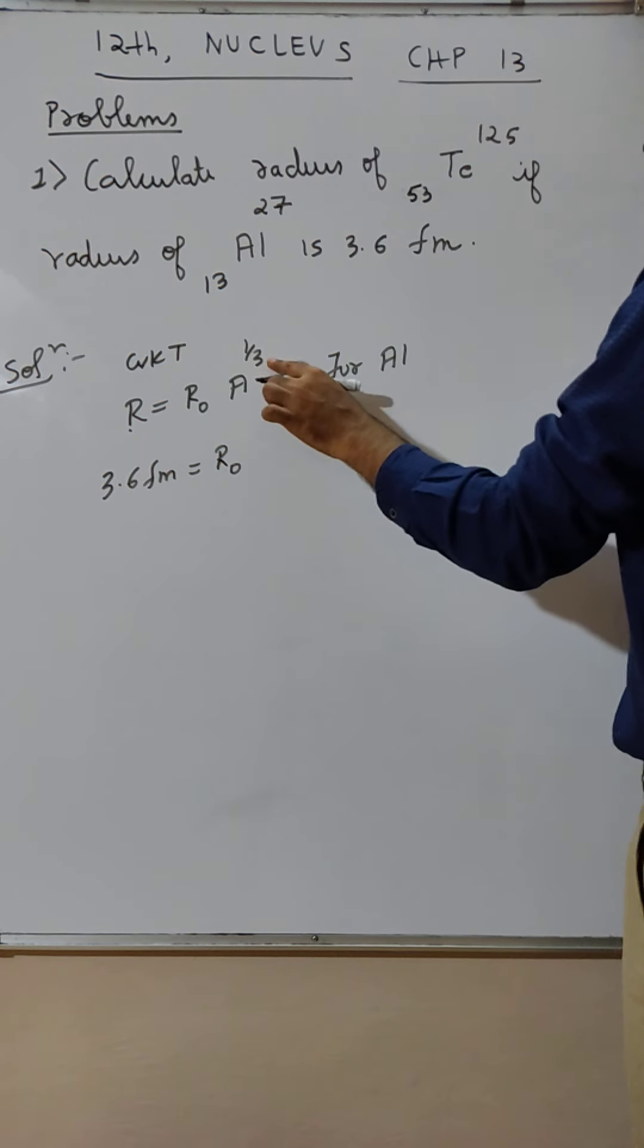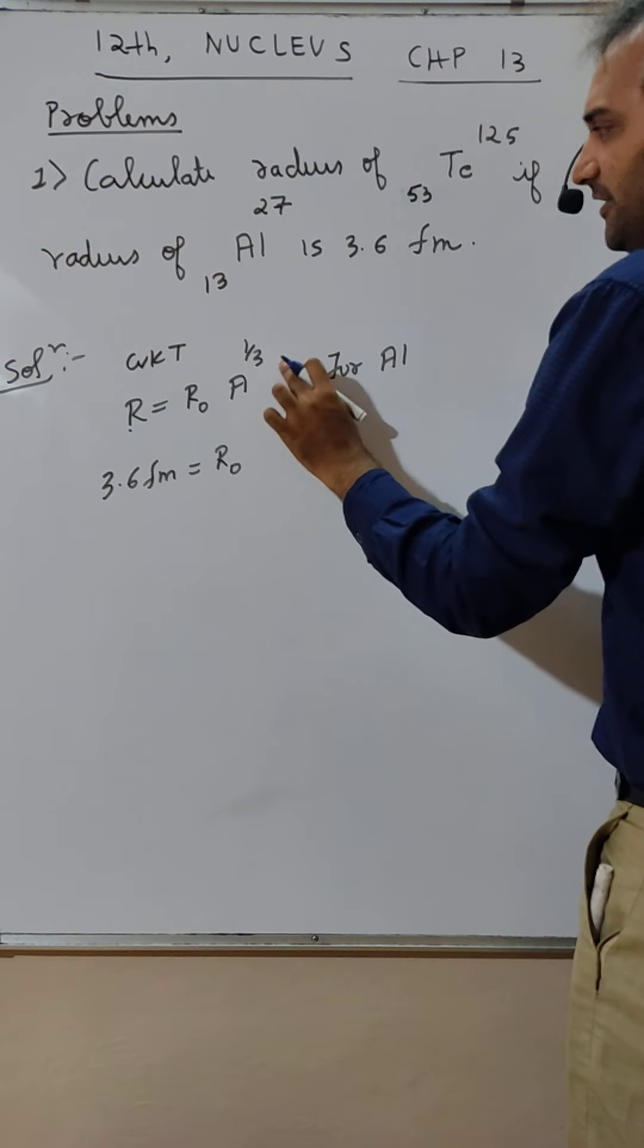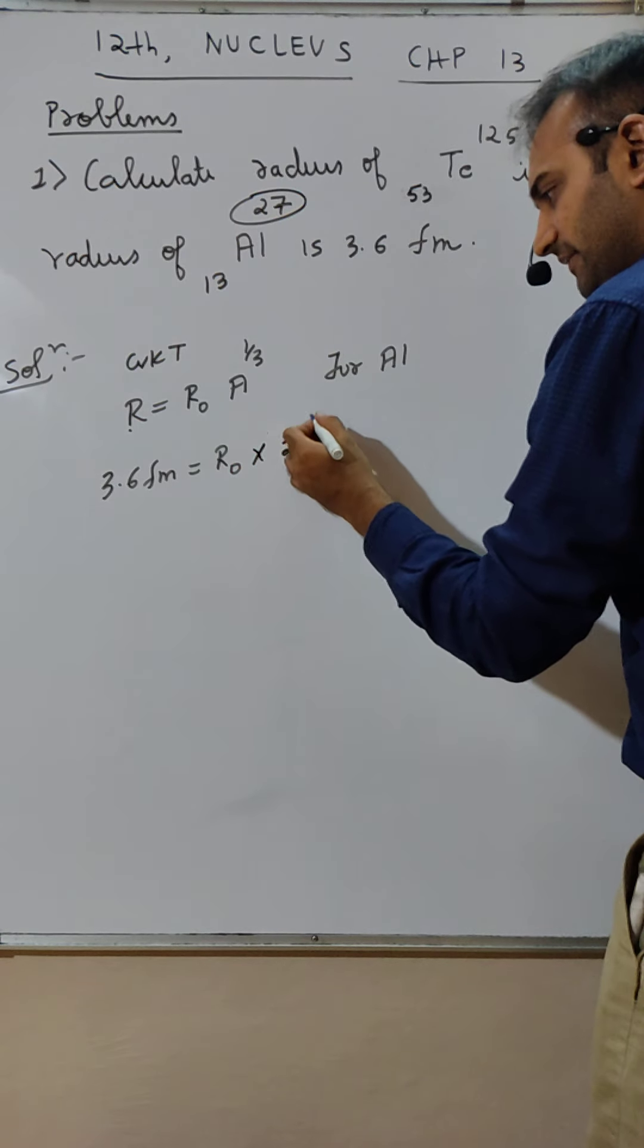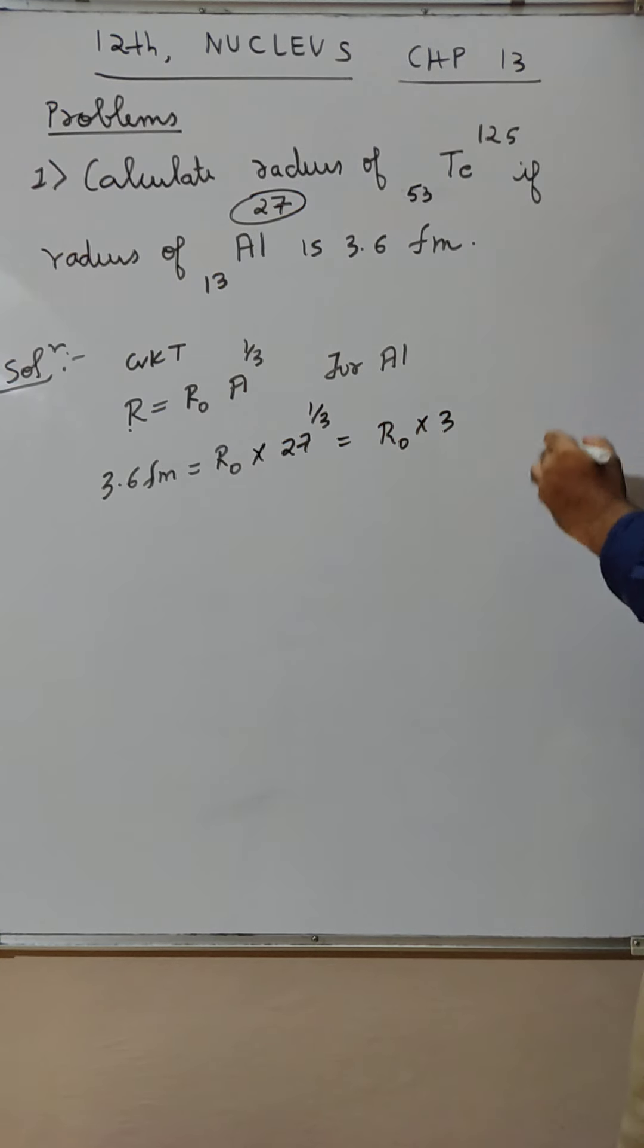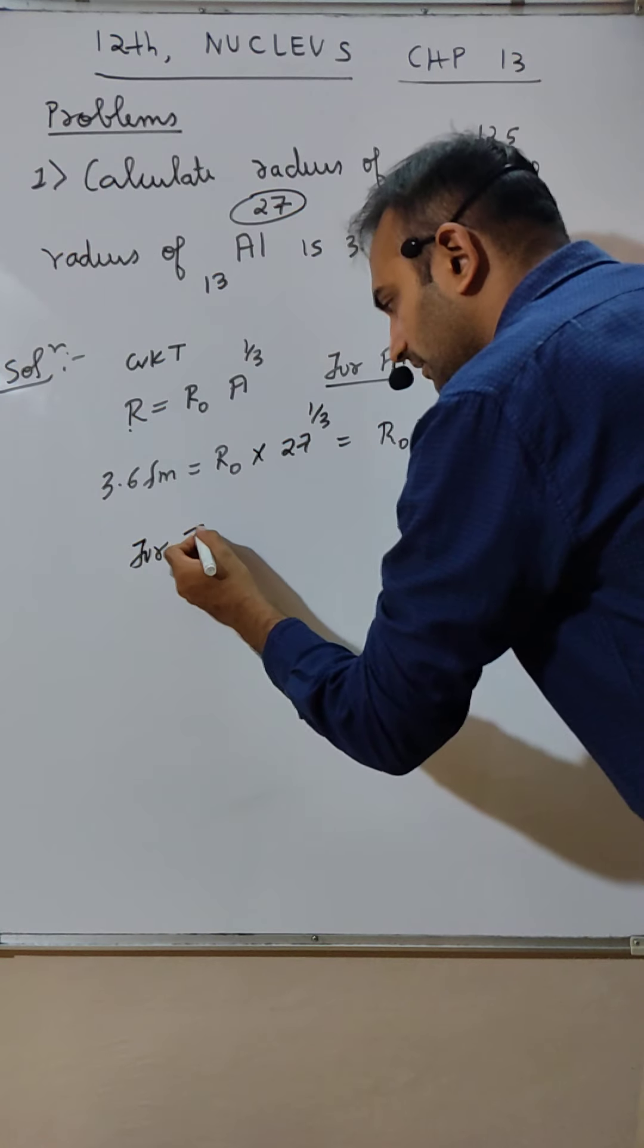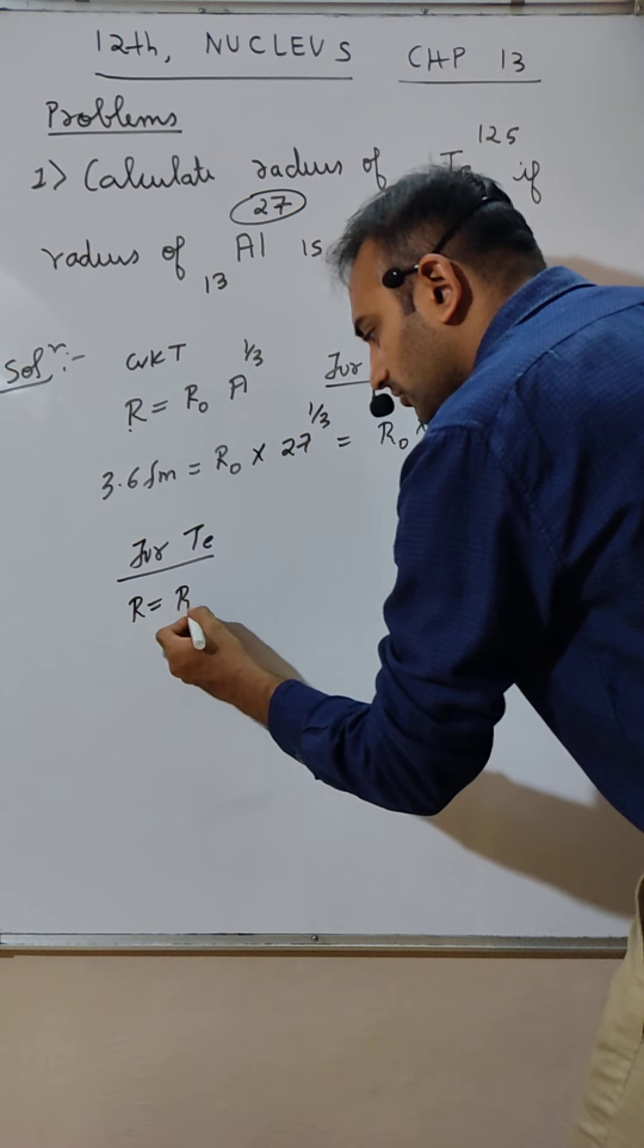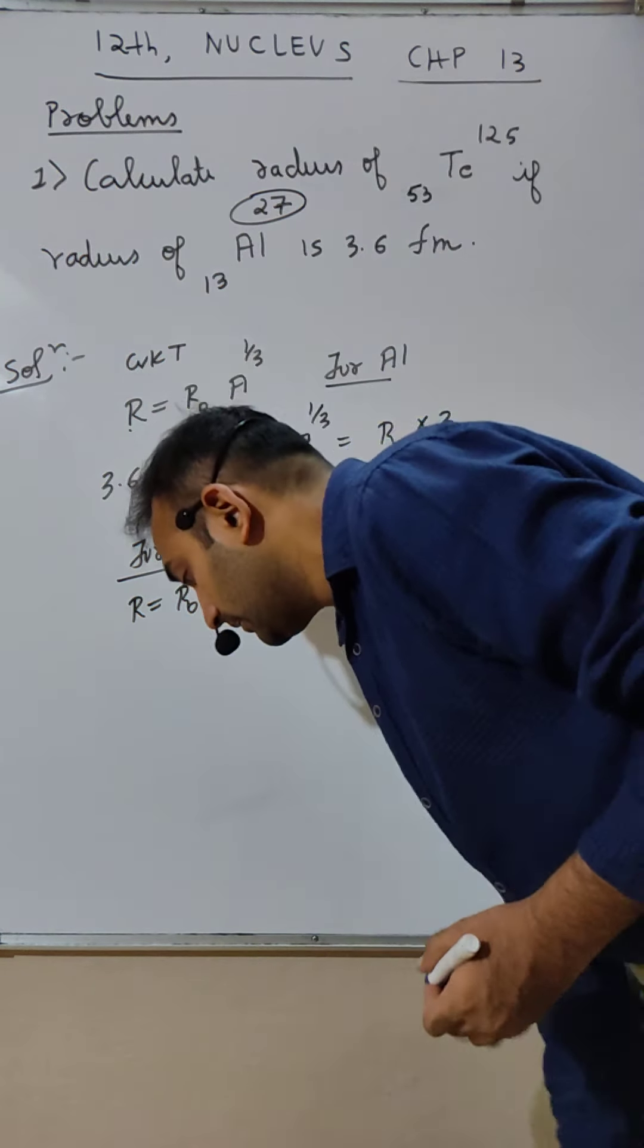Aluminum's atomic mass number is 27, so 27 to the power 1/3. You know 27's cube root is 3. So 27's cube root is 3. Now what is R? R is what we need to find - R₀.